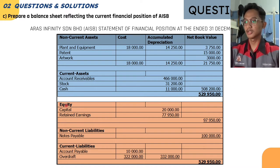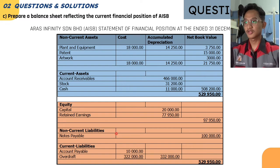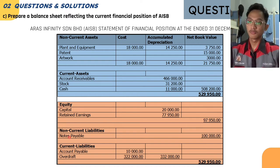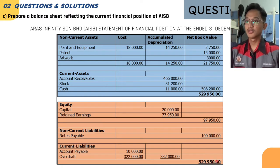For stockholders' equity, we have a capital value of 20,000 and retained earnings of 77,950 ringgit, giving total stockholders' equity of 97,950 ringgit. For liabilities, non-current liabilities consist of notes payable of 100,000. Current liabilities include accounts payable of 10,000 and overdraft of 322,000, totalling 332,000. Total stockholders' equity and liabilities equals 529,950 ringgit — equal to total assets, confirming that assets equal liabilities plus stockholders' equity.